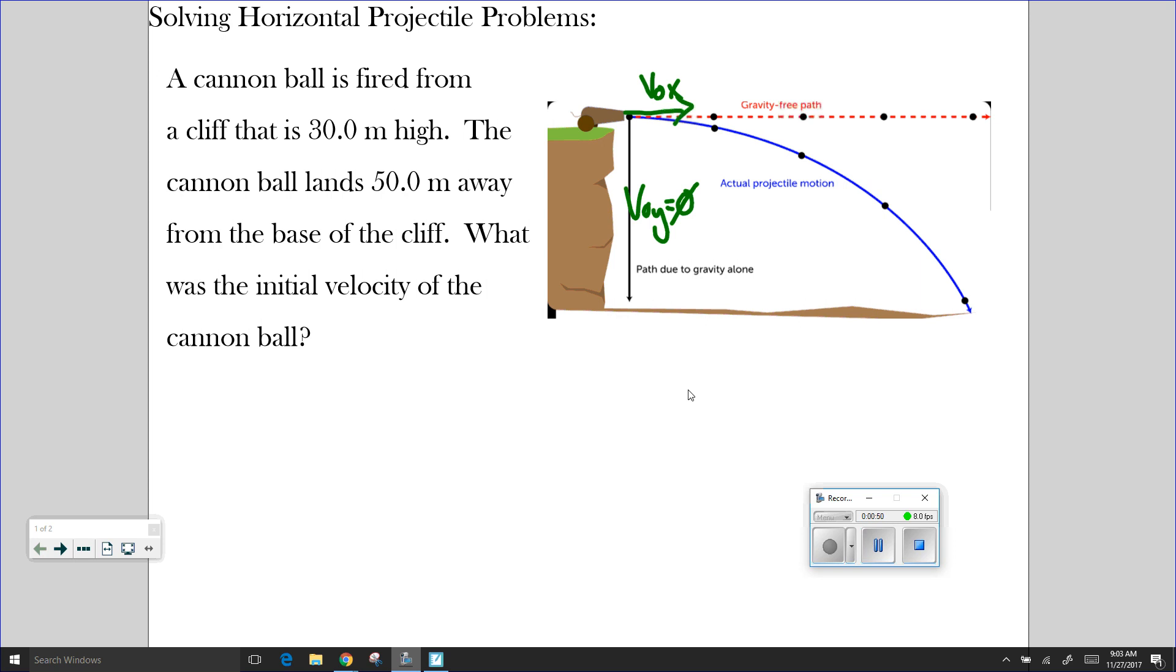So if you notice some of the vectors that I put up here, the initial velocity in the x direction is what I'm trying to solve for. The initial velocity in the y direction does not exist because, once again, that projectile was fired straight away from the cannon.